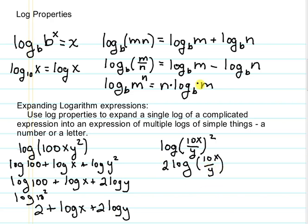Now we have a division so we can use this second property. And this 2 times the entire thing minus log of y using that second property.